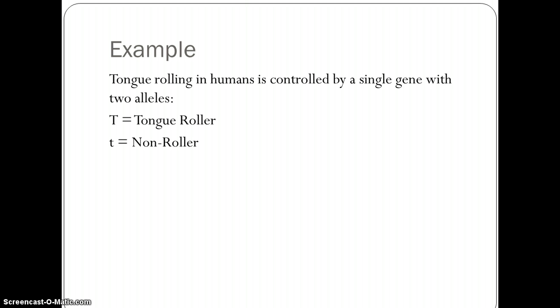If you remember, we normally represent genes using a letter from the alphabet. Tongue rolling will use the letter T to represent this gene. Capital letters are normally used to represent dominant alleles and lowercase letters for recessive alleles. We'll use a capital T to represent somebody who can roll their tongue and a lowercase t for somebody who can't.